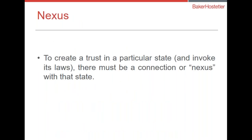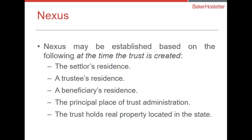So how do you get connected to a particular state if those items are of interest to you or your clients? There has to be a connection — a nexus — some kind of meaningful connection to that particular locale. Nexus can be established at the time the trust is created based on: the settlor's residence, the trustee's residence, the beneficiary's residence, the principal place of trust administration, or the trust holding real property in the state of interest. Those are the big ticket items for connecting jurisdiction.